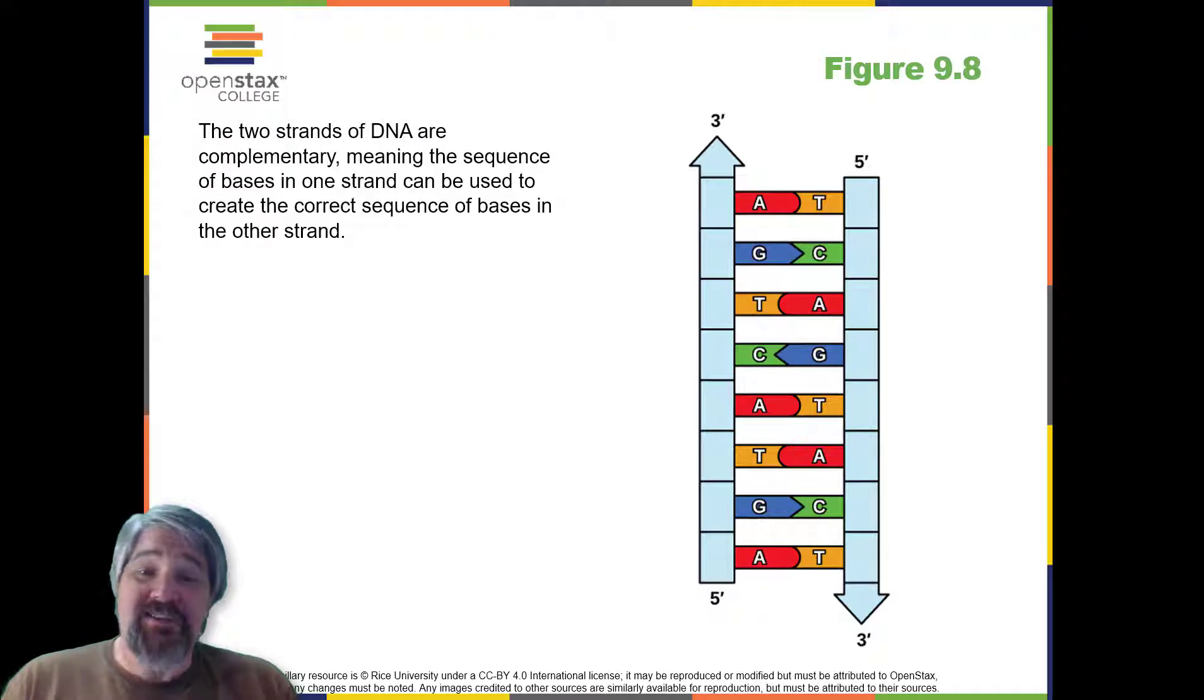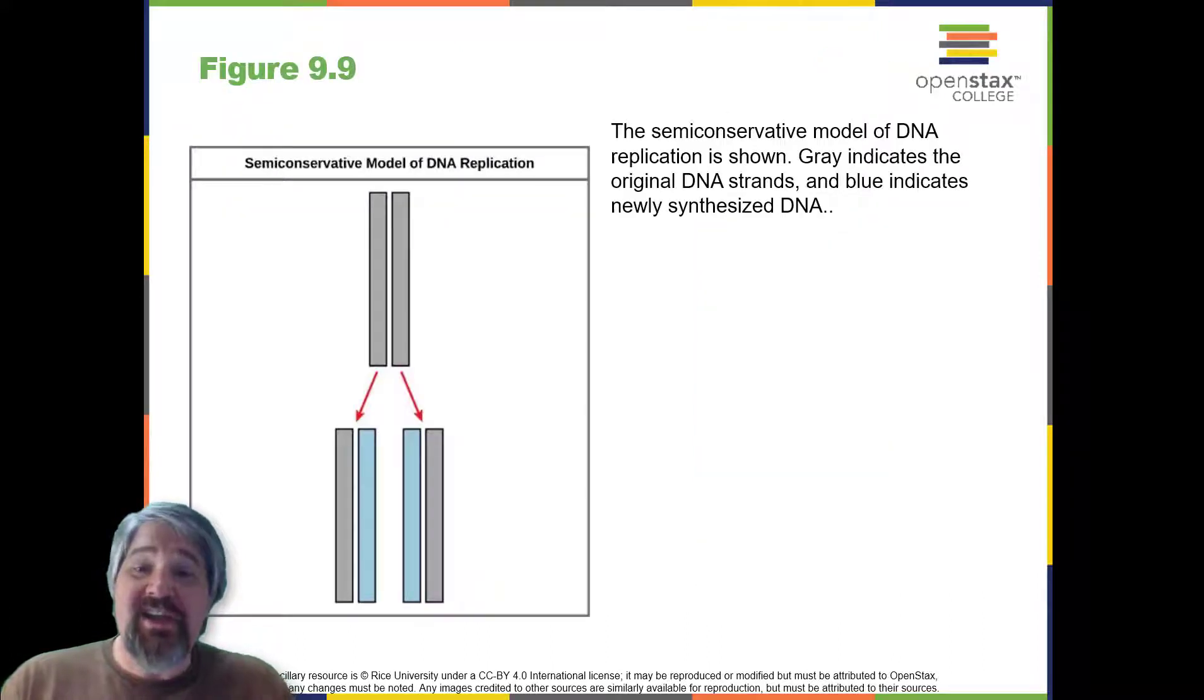This model for replication suggests that the two strands of the double helix separate during replication, and each strand serves as a template from which the new complementary strand is copied. During DNA replication, each of the two strands that make up the double helix serve as a template from which the new strands are copied. The new strand will be complementary to the parental or old strand. Each new double strand consists of one parental strand and one new daughter strand. This is known as semi-conservative replication. When two DNA copies are formed, they have an identical sequence of nucleotide bases and are divided equally into two daughter cells.